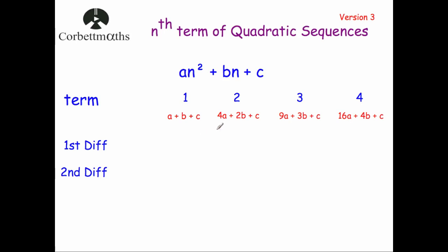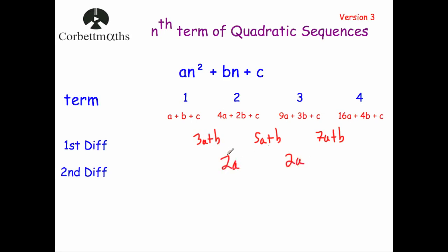Looking at the first differences, it goes up by 3a + b for the first one, then 5a + b, then 7a + b. Those are the first differences of a quadratic sequence and they depend on the values in the nth term. The second differences of a quadratic sequence will always be the same — in every case it's going to be 2a.